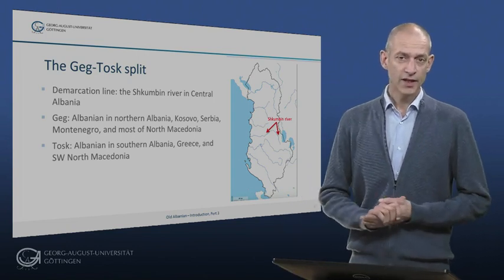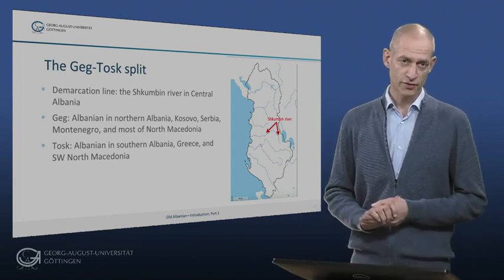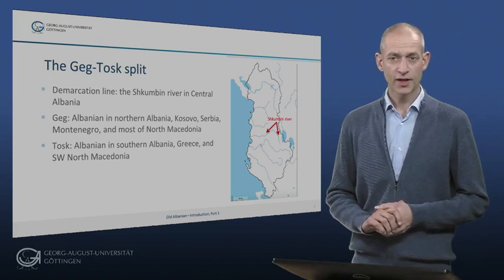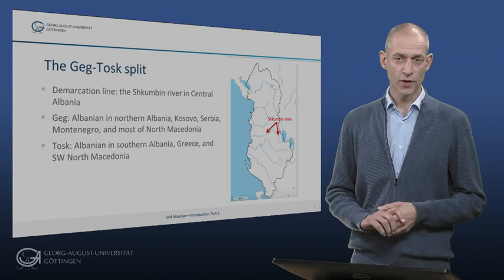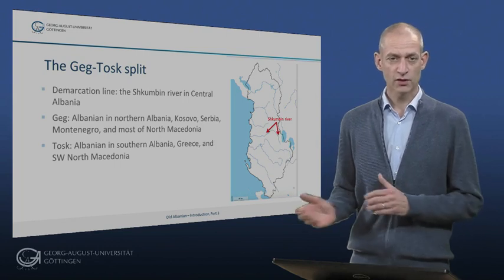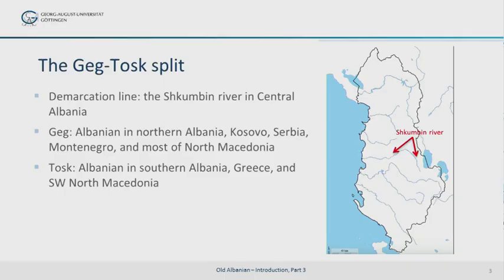The Albanian dialects fall into two groups: the GEG dialects in the north and the TOSC ones in the south. The border between them runs roughly from west to east, close to the river Skumbin, which runs from the Albanian mountains westwards to the sea in the middle of the Republic of Albania. This means that the Albanian dialects spoken in northern Albania, in Kosovo, Montenegro, Serbia and northwestern Macedonia are GEG dialects.